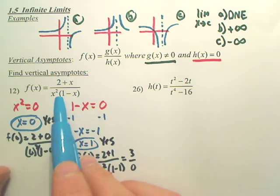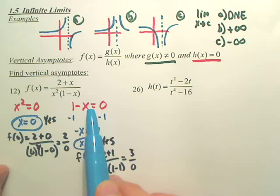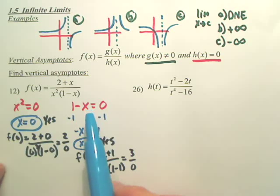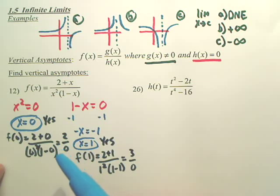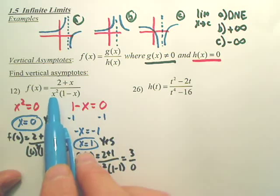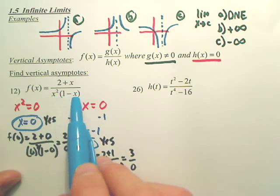So, basically, you set the bottom equal to zero. And then, you check those values to see if you get a non-zero over zero.